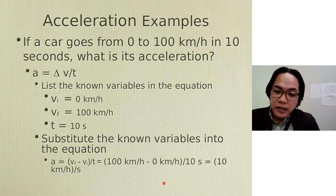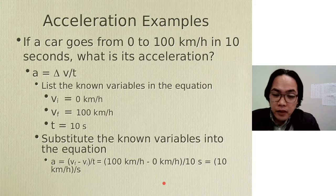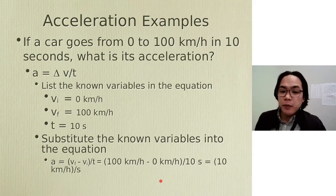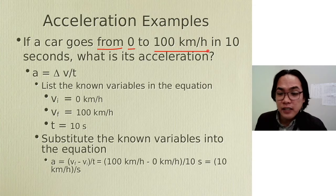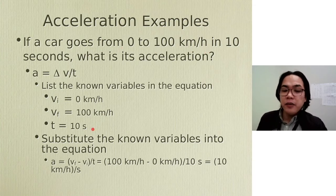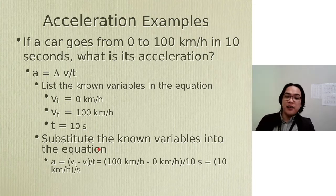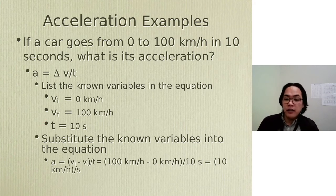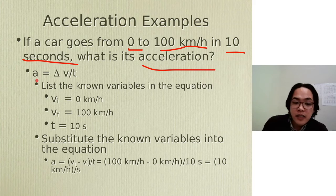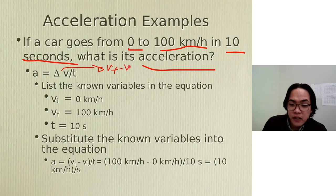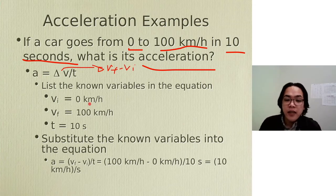Here is a problem related to acceleration. If a car goes from 0 to 100 kilometers per hour in 10 seconds, what is its acceleration? Take note of the word 'from' — that means it is your starting velocity, so 0 is your initial velocity and 100 km/h is your final velocity. Every time we do problem solving, we need to find the given, the required, the formula, and the solution. Since acceleration is missing, we're going to use delta V divided by time, where delta V is VF minus VI.